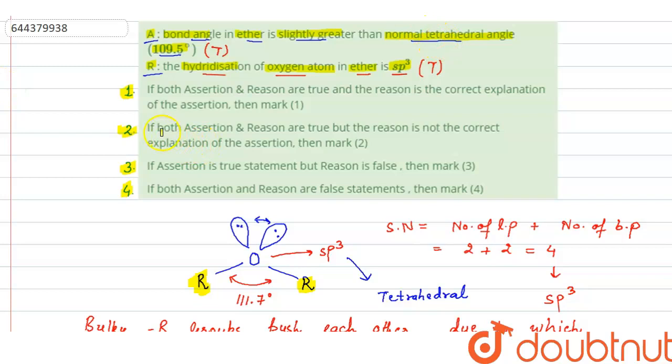So the correct option will be: if both assertion and reason are true but the reason is not the correct explanation of the assertion, then mark option two. So this will be the correct option here. So option two is the answer. Thank you.